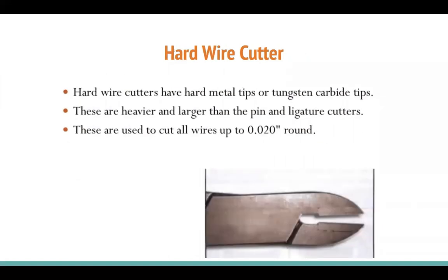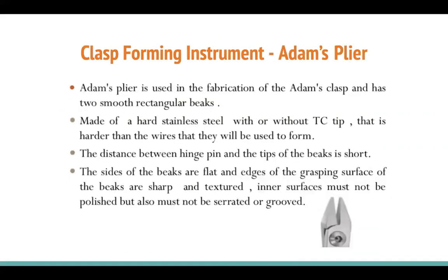Keep a hard wire cutter in the clinic for any situation requiring cutting hard wire or adjusting appliances, so you don't damage your expensive instruments. This hard wire cutter is inexpensive and can have a metal or tungsten carbide tip — I recommend just a metal tip since it's not used often. These are heavier and larger than pin and ligature cutters and are used to cut all wires up to 0.02 inches.